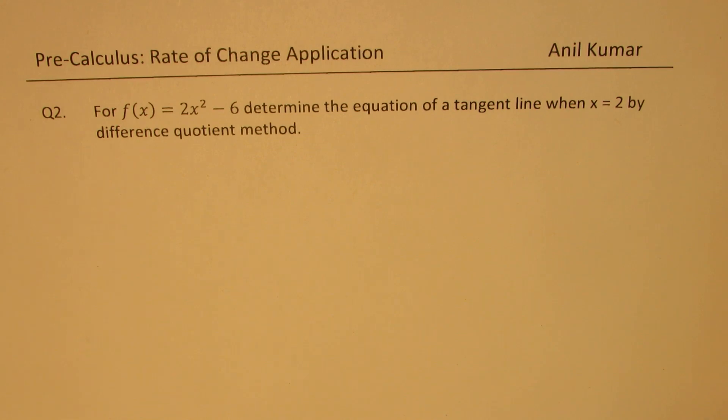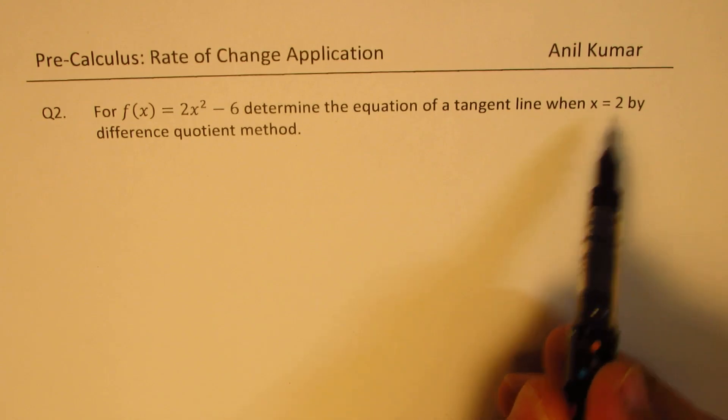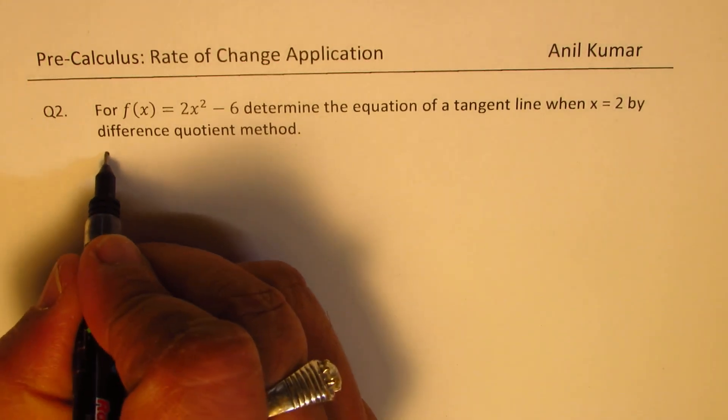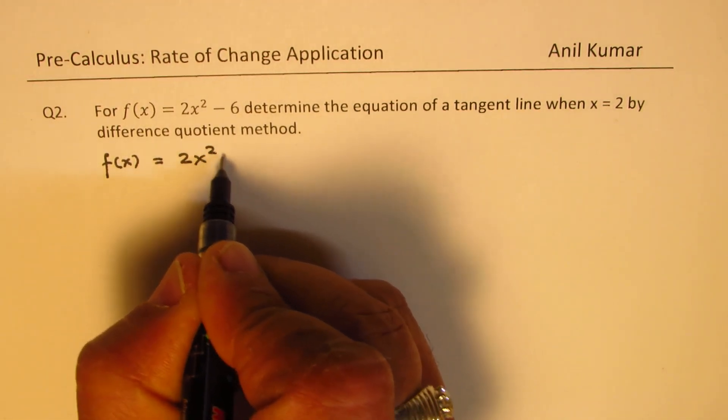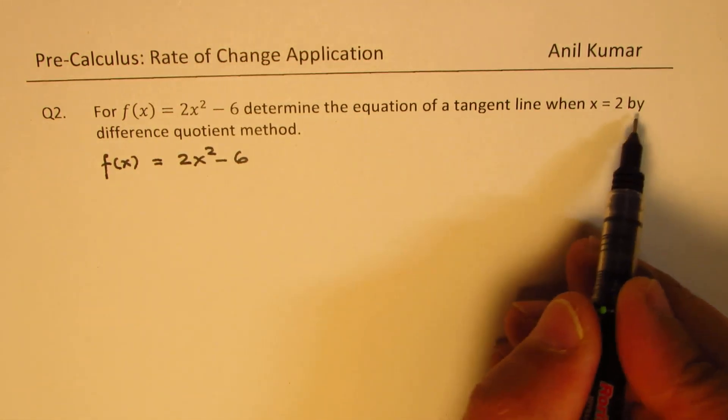For f(x) = 2x² - 6, determine the equation of a tangent line when x = 2 by difference quotient method. So we are given the function f(x) = 2x² - 6. We need to find tangent line at x = 2.